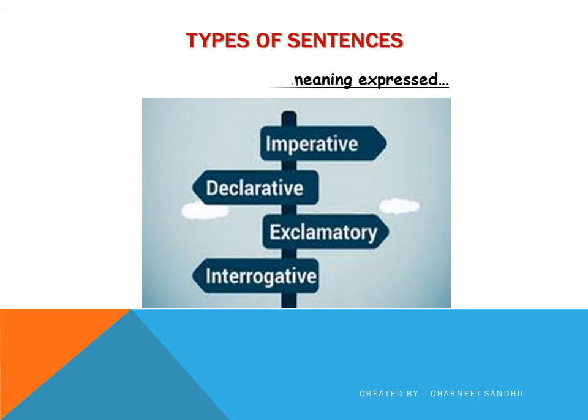Types of sentences are based on the sense or meaning that these sentences express. The first type is imperative sentence. The second type is declarative sentence. The third type is exclamatory sentence. And the fourth type is interrogative sentence.